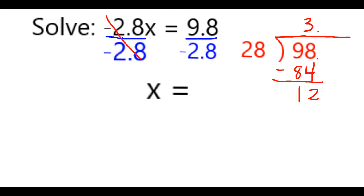So 3 times 28 is 84. When I do the subtraction I get 12, and I'm going to bring down a 0. Note that I do need to add a decimal point because I'm going past the 0, so I need to add it both in the divisor and also in the quotient.